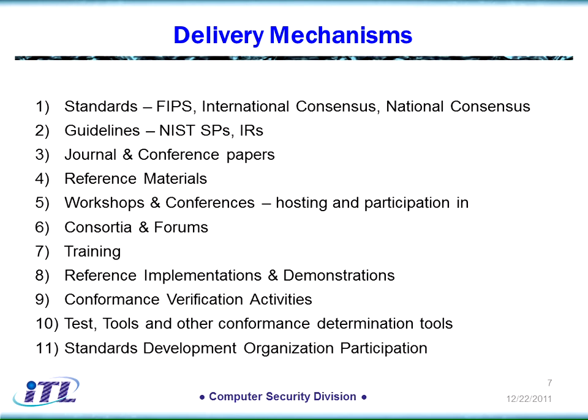Delivery mechanisms refers to how we get the work out. Tech transfer is a really important issue at NIST — we do a lot of our own research and that work gets out through a variety of means and into commercial products. Current efforts include the Border Gateway Protocol work and attribute-based access control, a joint effort with other government agencies looking at ways to improve access control for systems, which is a perennial problem in need of work.